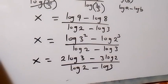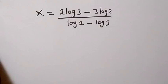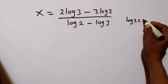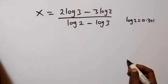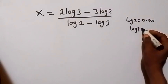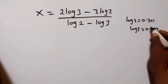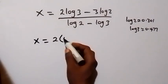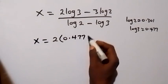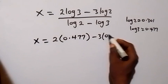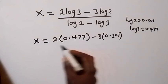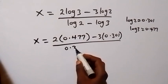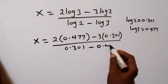Now this is what we have. And to put our answer in decimal, we can substitute the value of log 3 and log 2 here. Log 2 is approximately equals to 0.301, and log 3 is approximately equals to 0.477. Then when we substitute these values here, we have x now equals to 2 times 0.477, then minus 3 times 0.301, then divided by 0.301 minus 0.477.